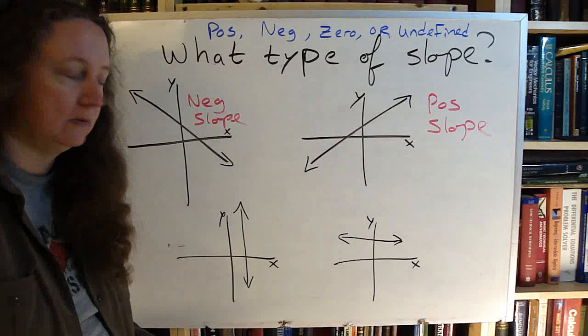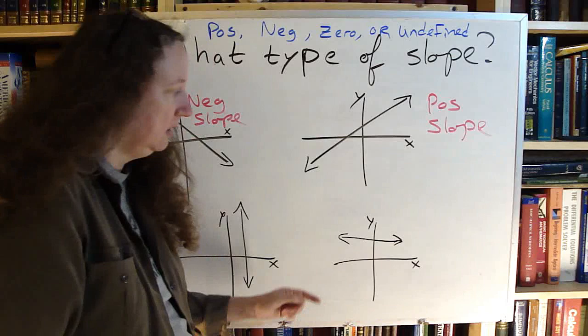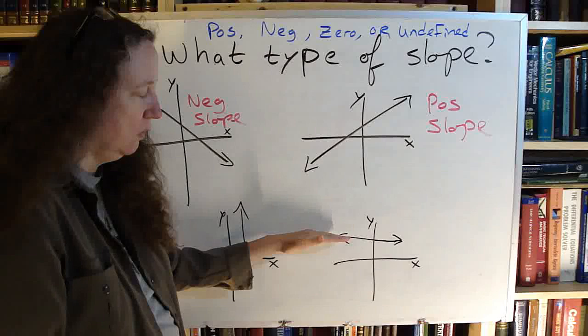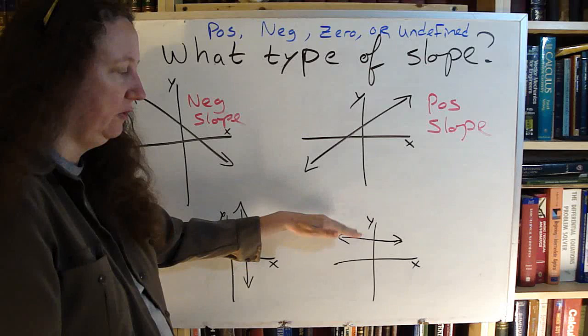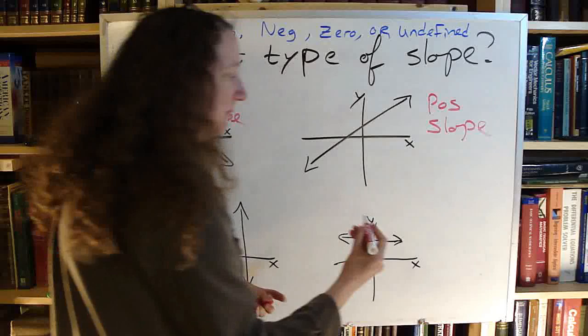As I go from left to right, does this go up, does it go down, or does it stay the same? This one stays the same. It changes nothing at all. It goes up zero, it goes down zero. It stays at zero. So this is my zero slope.